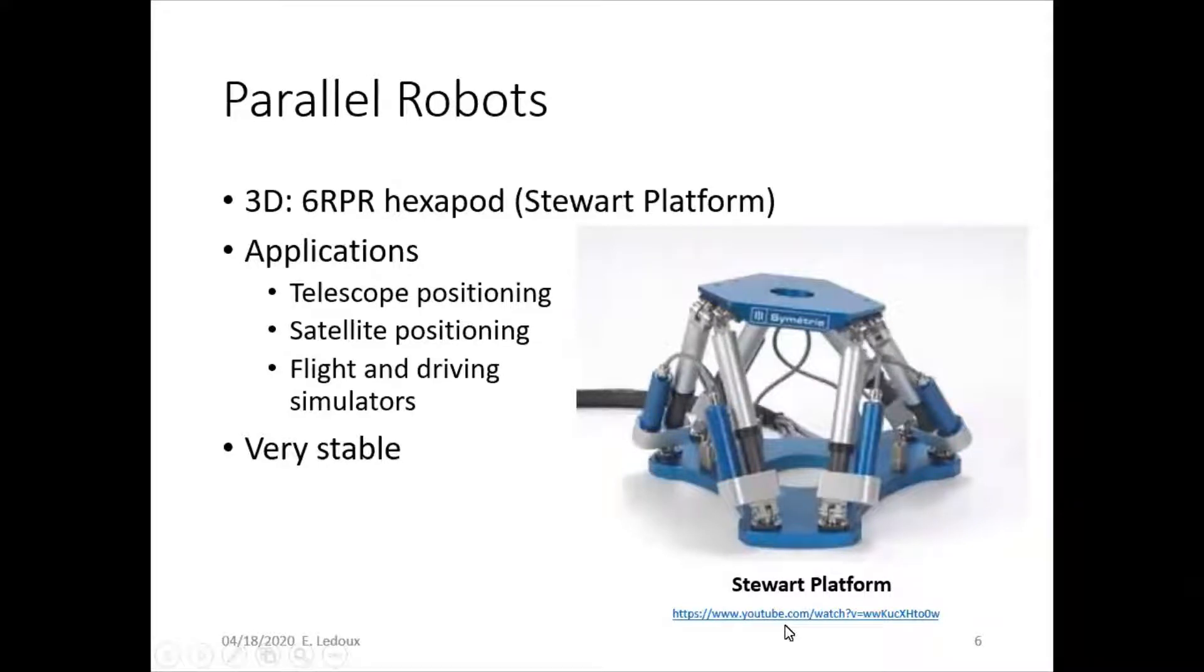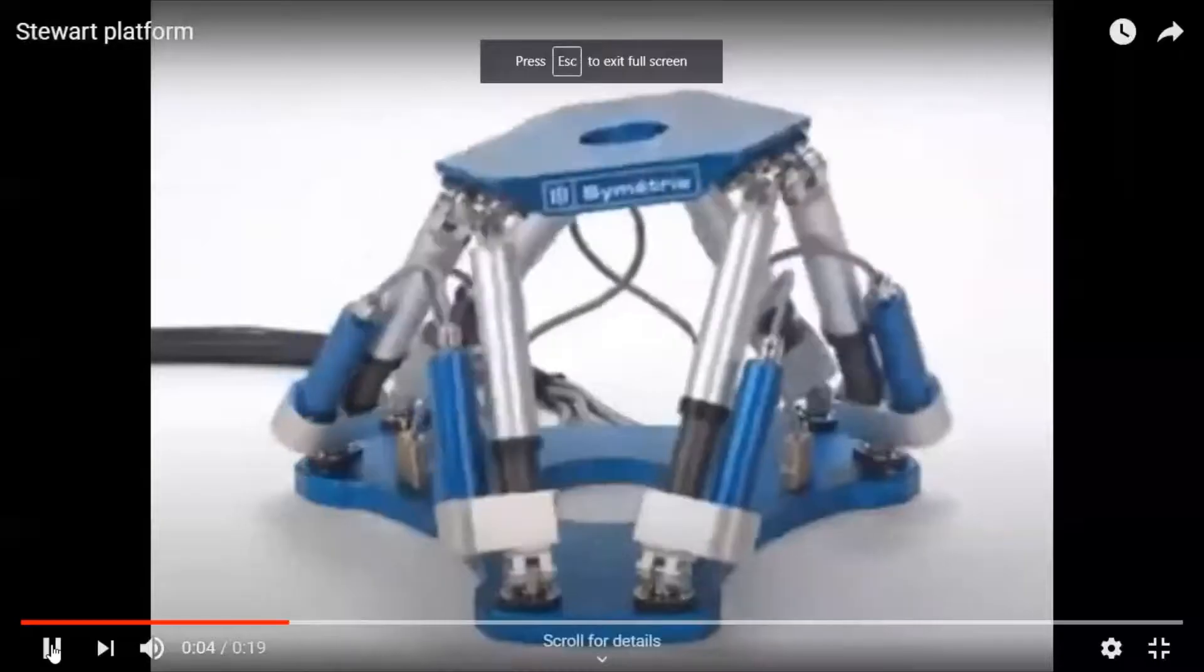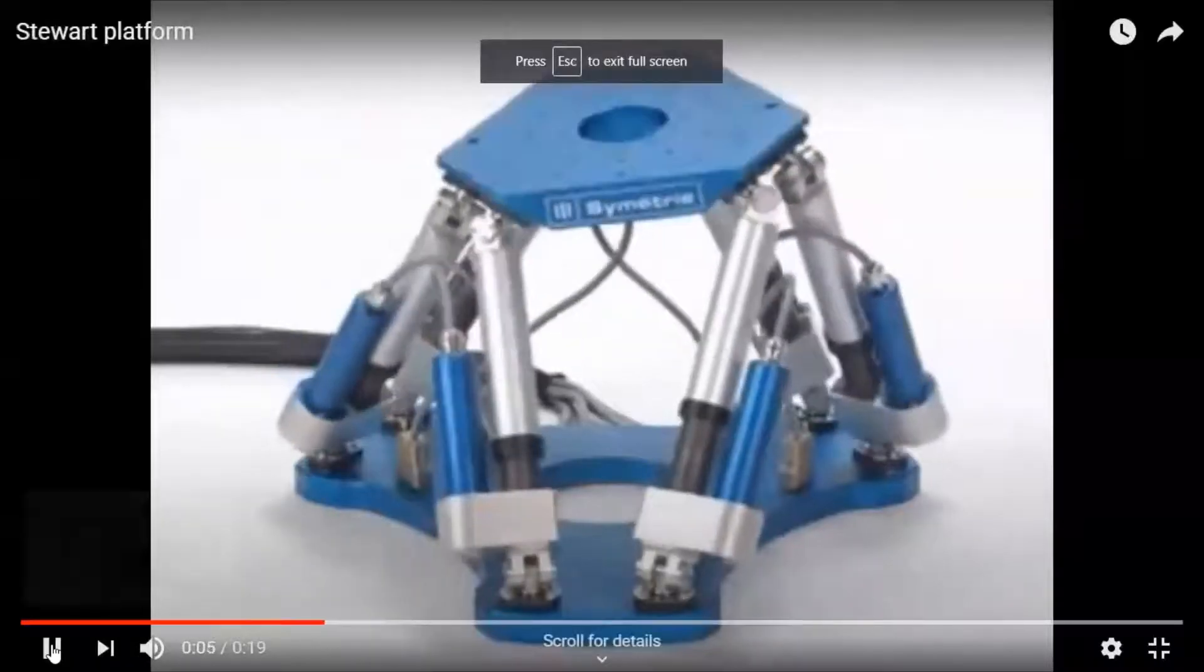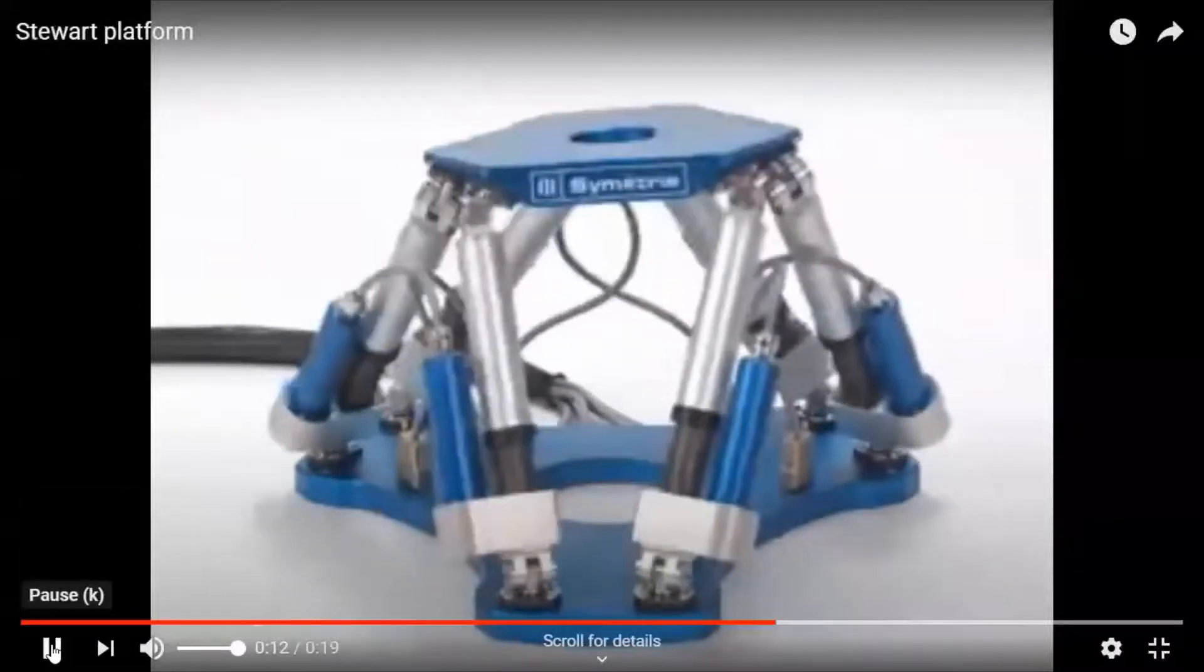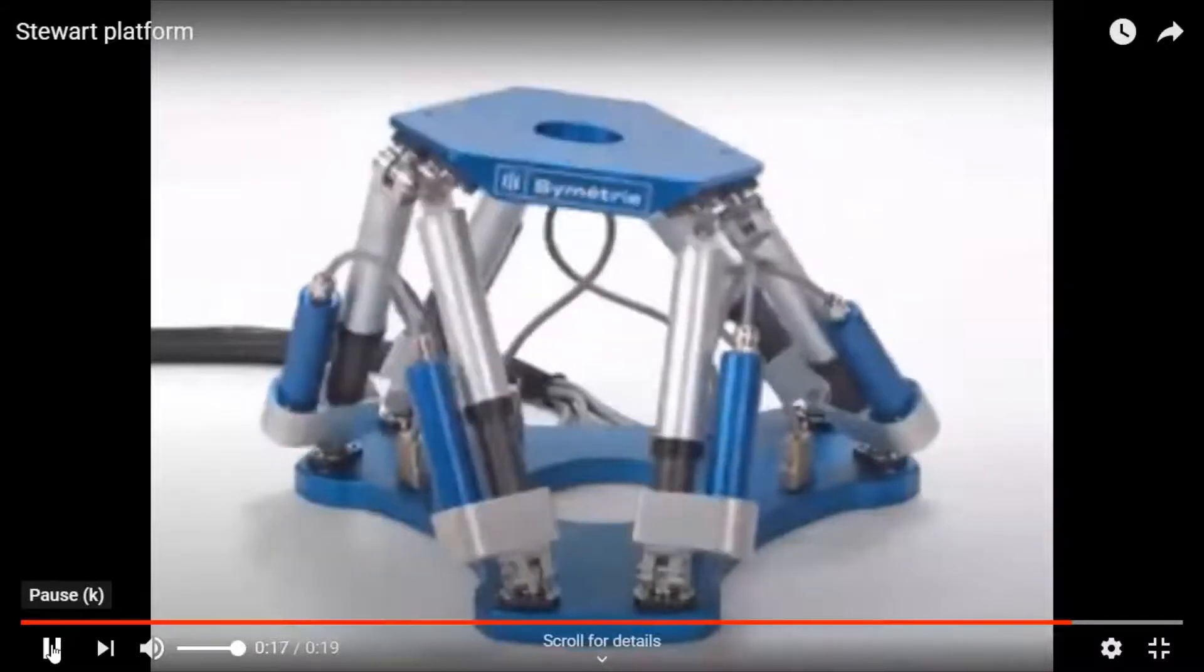So we'll watch a video of this. This just illustrates how it's moving as you control each of the actuators. So this one is a six-degree of freedom, whereas the delta had three degrees of freedom.